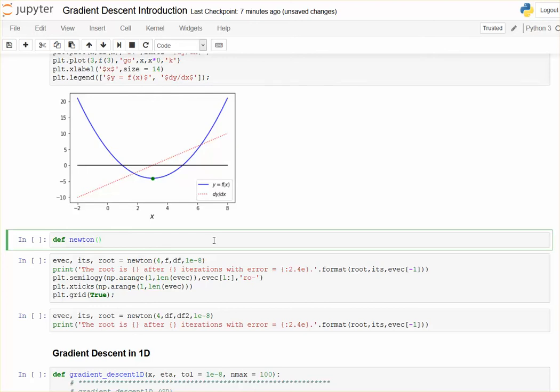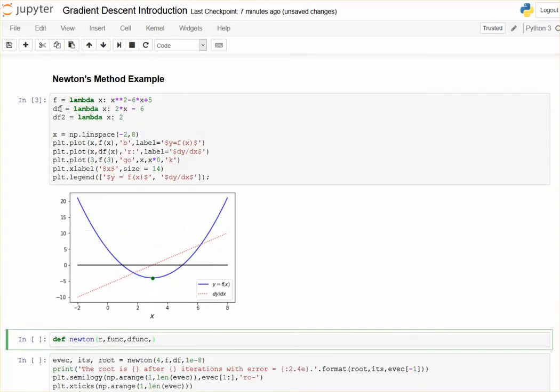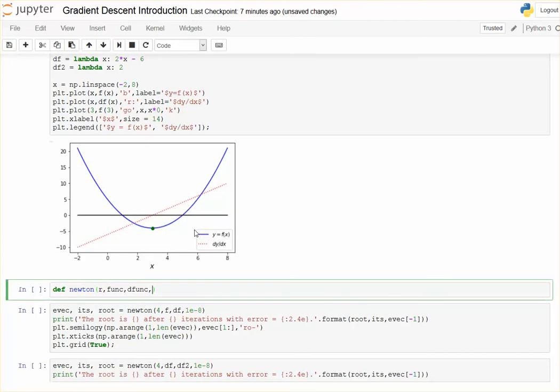What am I going to need? I'm going to need an initial guess. I'm going to need a function. I'm going to need the derivative of that function. So I'll call those func and defunc. These inputs will be this f and df. You can also create a g and dg if you wanted to and make those different functions if you wanted to find the zeros for those functions.